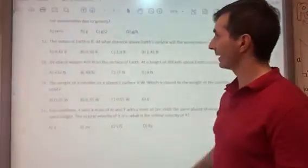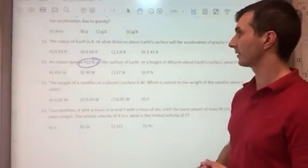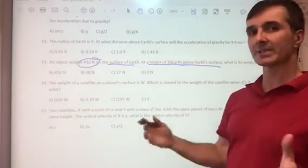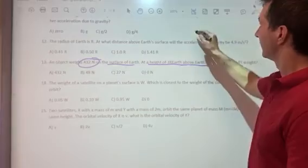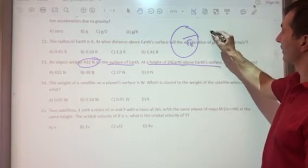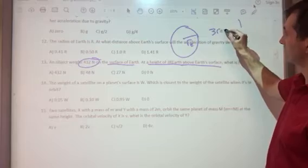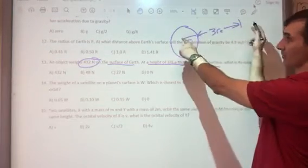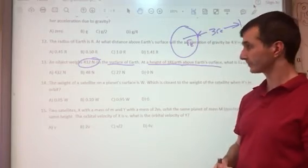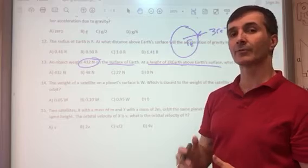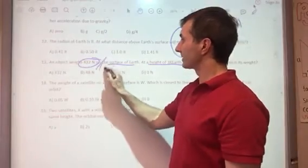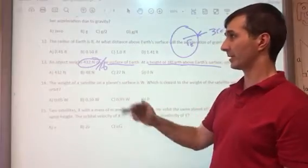For the next one, this is how much it weighs one Earth radius away from the center, which is at the surface, and at a height of 3R above Earth's surface. Your actual distance is not 3 times greater—it's 4 times greater. If this is the Earth, that's the Earth's radius, and there's 3 Earth radii above, so the actual distance is 4 Earth radii away. If you're 4 times further, you have 4² times less force, so I'd divide 432 by 16, which gives me probably 27.